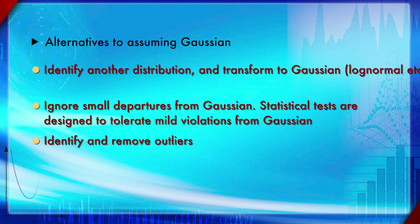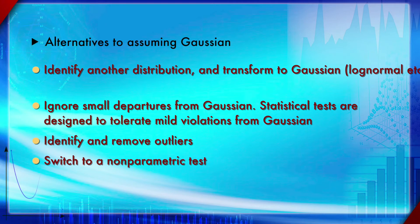Detecting and removing outliers will be discussed at length in the next section. Switching to a non-parametric test should be done as a last option — only when none of the above approaches work. The reason is that non-parametric methods do not have as good statistical power as parametric methods.